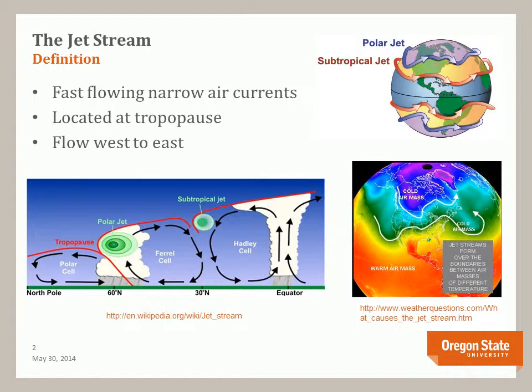The jet stream is a river of air that forms between large air masses of different properties. The globe on the upper right shows the general locations of the Earth's jet streams. There are two polar jet streams and two subtropical jet streams. The exact location of the jet streams depends on the character of the air masses, the season, and the interaction with other large atmospheric processes like El Nino and the Coriolis effect.